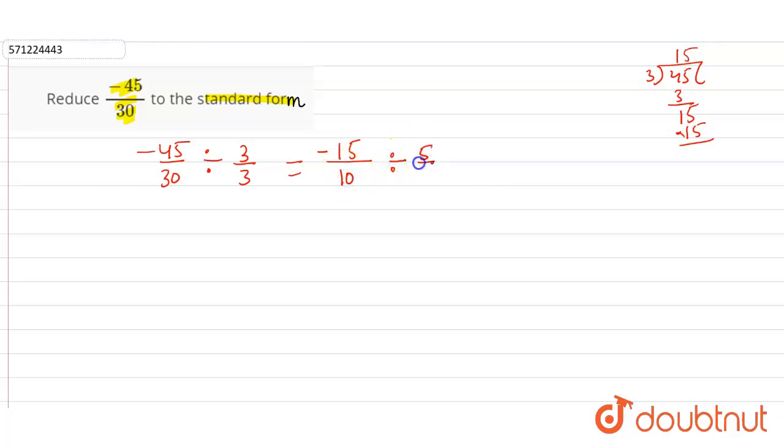Now we can divide this by 5 because the common factor here is 5. So -15 divided by 5 is -3, and 10 divided by 5 is 2.